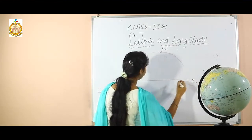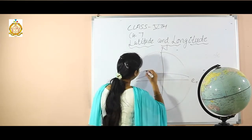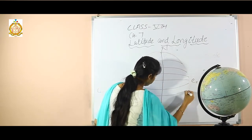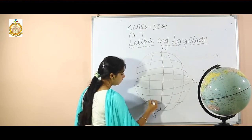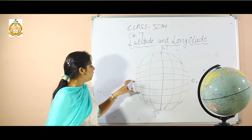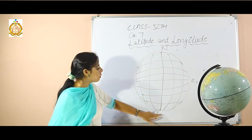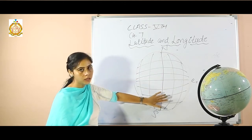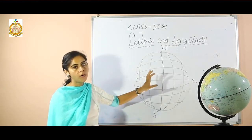What is a grid? The central part of the earth is the equator. The lines that run from the north to south pole are called meridians or longitudes. Horizontal lines are latitudes and vertical lines are longitudes. The network of latitudes and longitudes together is called a grid.